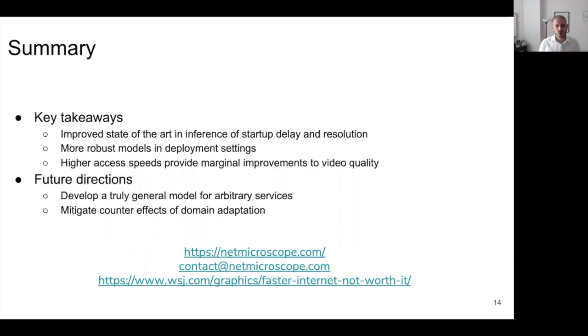Our work points to several avenues for future work. First, our composite model performed very poorly for services that are not in the training set, and a truly general model that could predict video quality for arbitrary services remains an open problem. Second, more work remains to be done to fully understand the potential of domain adaptation for networking problems. With this, I conclude my talk, and feel free to contact us at the email address shown in the slide, and don't forget to take a look at our webpage as well as the Wall Street Journal article that was written on this research. Thank you very much.